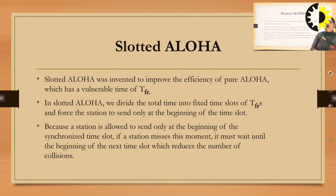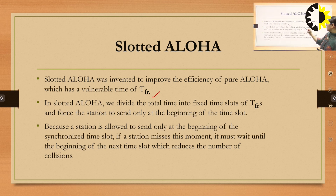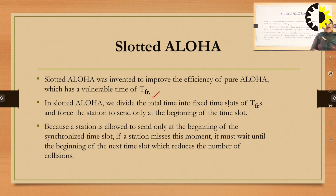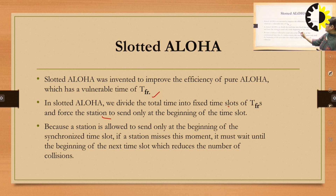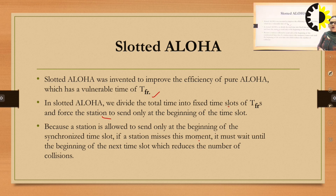Next is Slotted Aloha. Slotted Aloha is an advancement over Pure Aloha which has a vulnerable time of TFR, which is half the vulnerable time of Pure Aloha. In Slotted Aloha, we divide the total time into fixed time slots of TFR and force the stations to send only at the beginning of a time slot. In Pure Aloha, a station can send its data frame at any time, but in Slotted Aloha there is a constraint that a station can send its data frame only at the beginning of the time slot. If a station misses the beginning of a time slot, it has to wait until the beginning of the next time slot, which reduces the number of collisions by half.